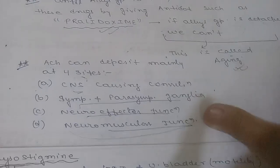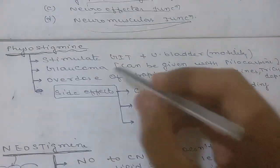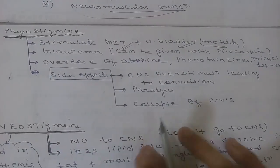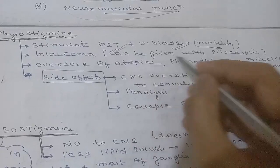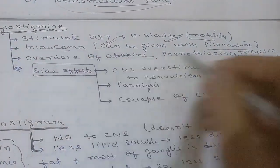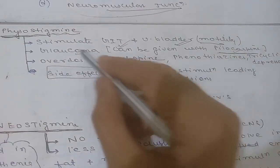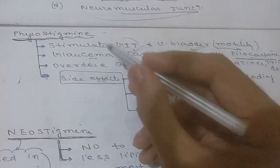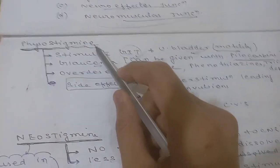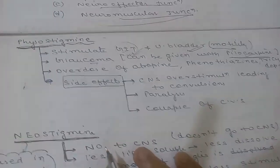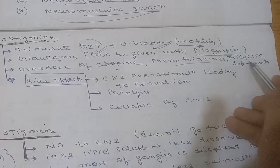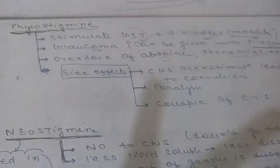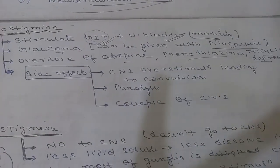Physostigmine stimulates the GIT and urinary bladder, increasing their motility. It can be given in glaucoma, generally combined with pilocarpine. It is also administered when there is an overdose of atropine, phenothiazines, or tricyclic antidepressants, since those are anticholinergic drugs and physostigmine can counter their effects.